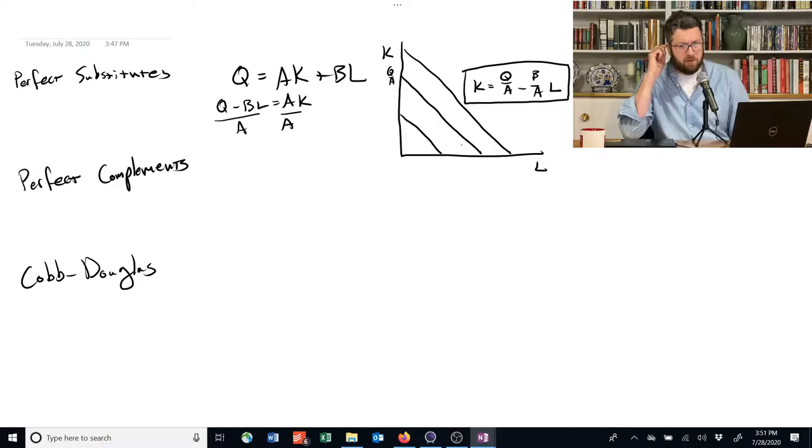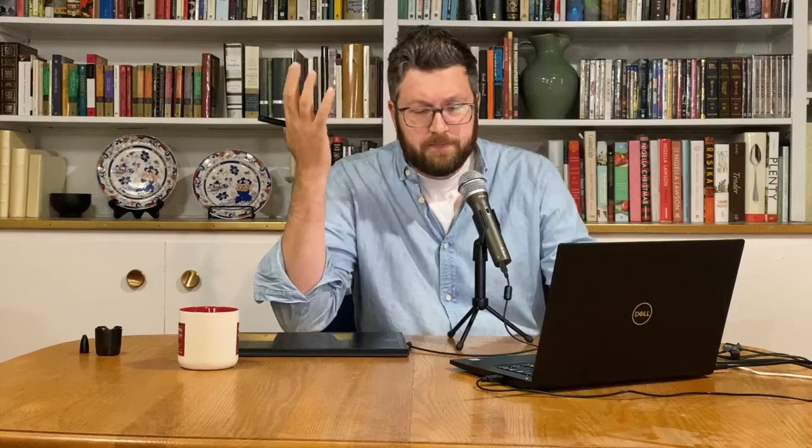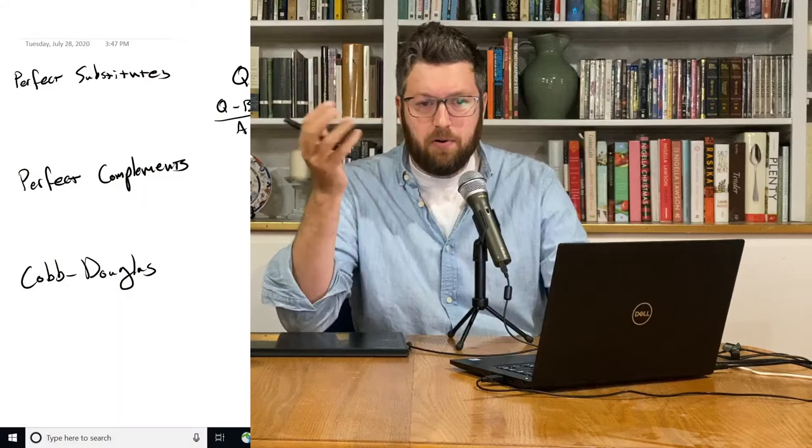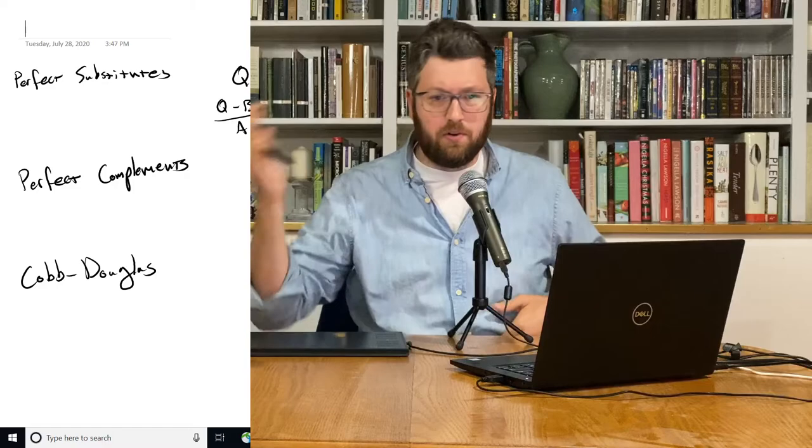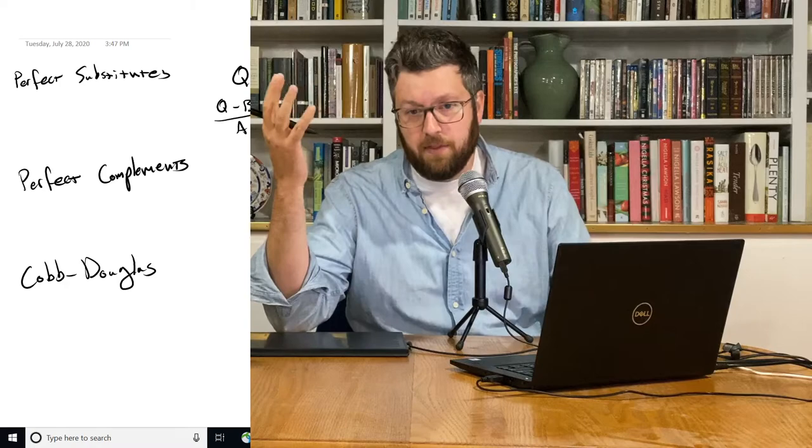So perfect substitutes, the name comes from the idea that one input can exactly substitute for another output if the proportions are right. So a machine can exactly do the same thing as a laborer. So it doesn't matter if you have a lot of laborers or only a few laborers, you can always just plug in a machine to do the job for them. Or vice versa. A human can just take the place of a machine.